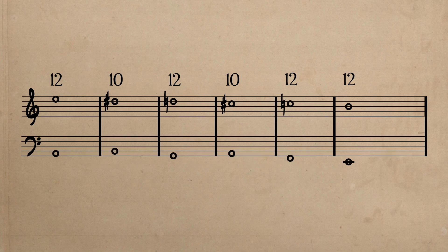In measure 2, the descent from E to D in the melody is prolonged by D-sharp, as is the descent from D to C via C-sharp in measure 4.